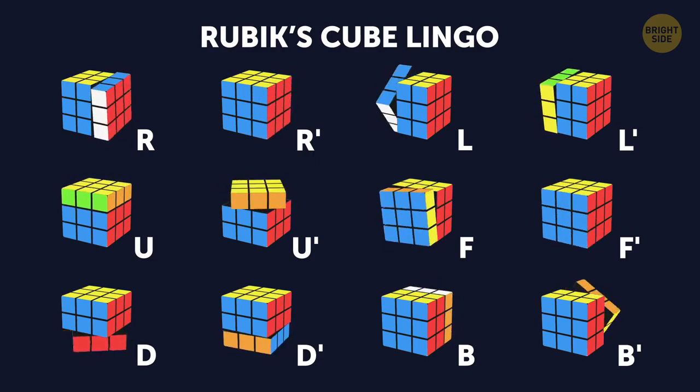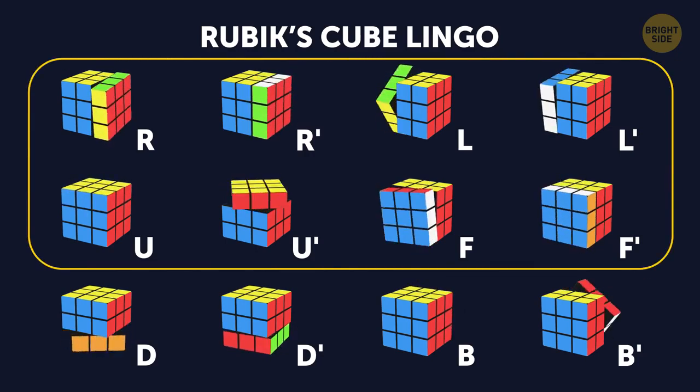An apostrophe means that the layer should move counterclockwise by 90 degrees. No apostrophe means it goes 90 degrees clockwise. When there's a number next to the letter, it stands for the number of turns you should make.